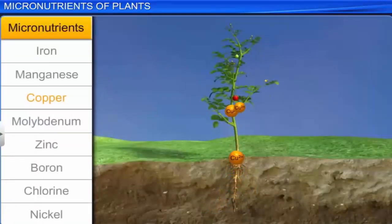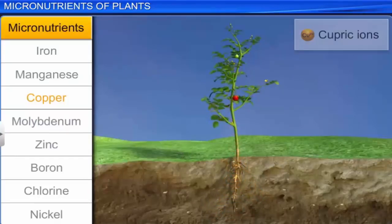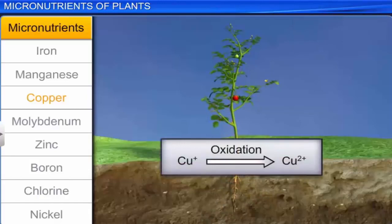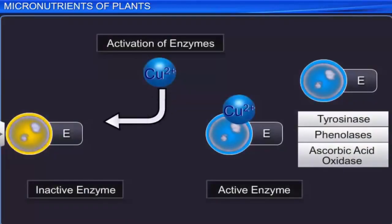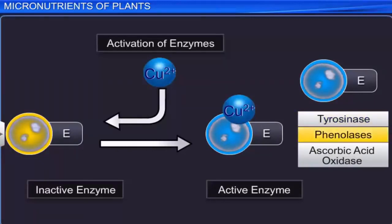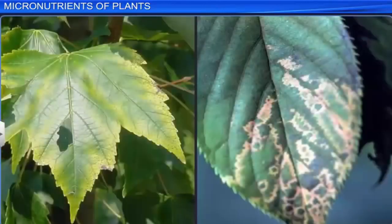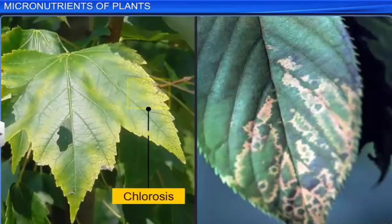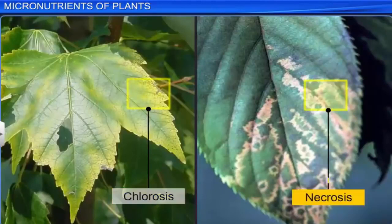Copper is another trace element absorbed from the soil, taken in as cupric ions. It is reversibly oxidized from Cu+ to Cu2+. It activates enzymes like tyrosinase, phenylases, and ascorbic acid oxidase. Deficiency symptoms include chlorosis of leaves followed by necrosis.